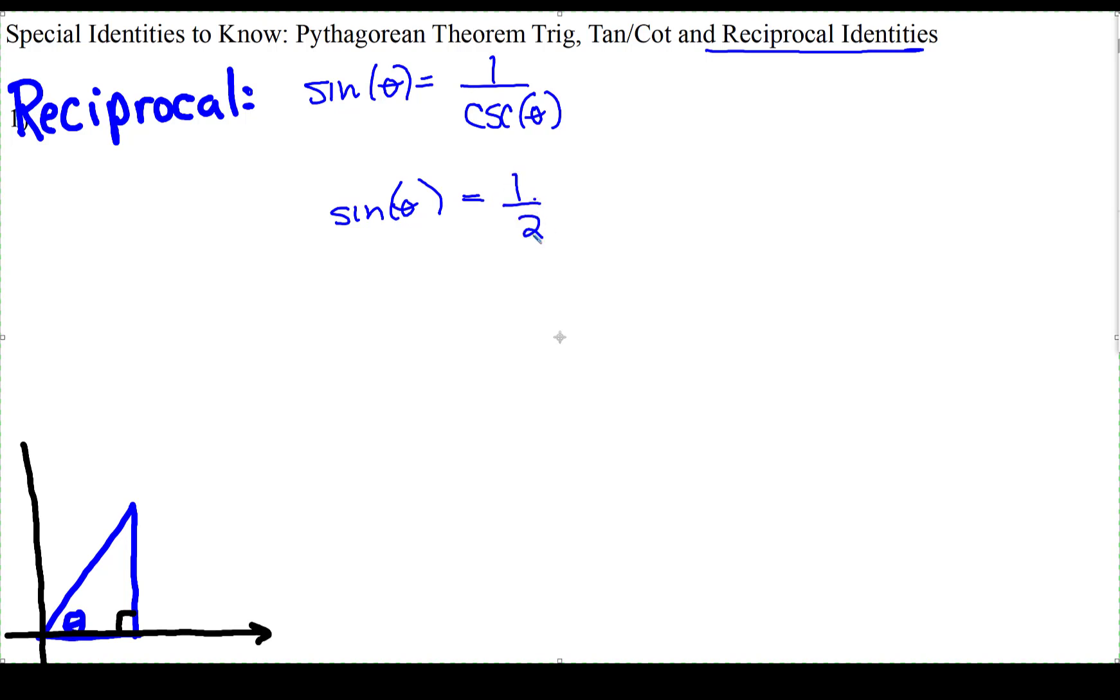It's 2 over 1, and the reciprocal of sine is cosecant. So cosecant, if we flip this side, we also then flip this, and 1 over sine is cosecant.